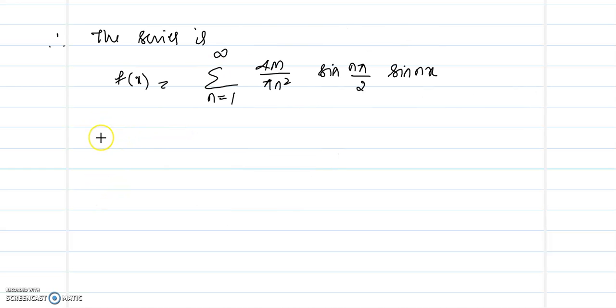So this is simply, so 4n by π will come on sine, and when n is equal to 1.